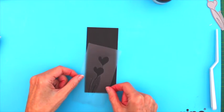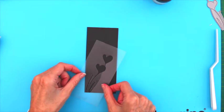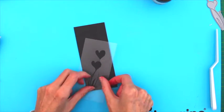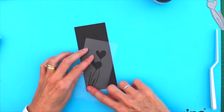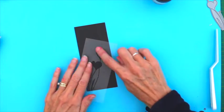The stencil sheet has an adhesive backing, so I'm able to place it on my black card and get a nice firm adhesion. This will help prevent any paste from slipping underneath.